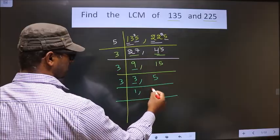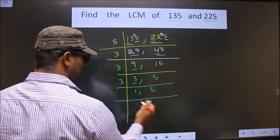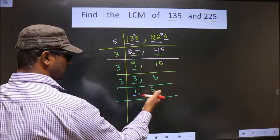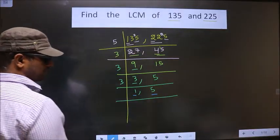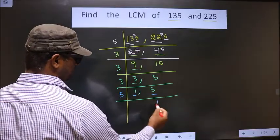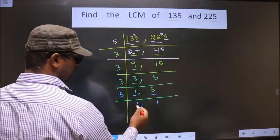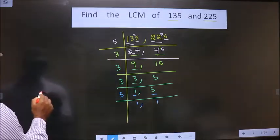5 is not divisible by 3. So, as it is, you write 5 here. Now, we got 1 here. So focus on the next number, that is 5. 5 is a prime number. So we take 5 and 1. So now we got 1 in both places.